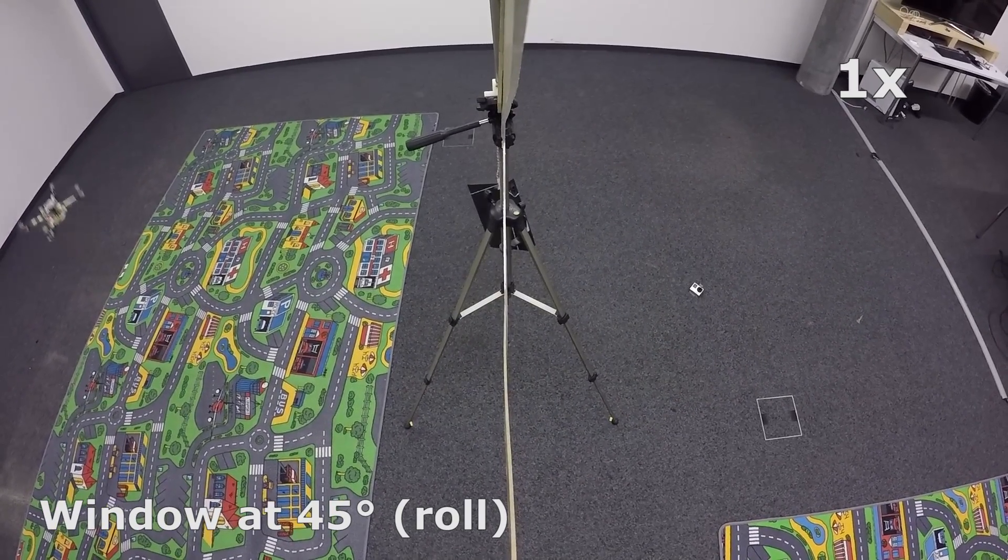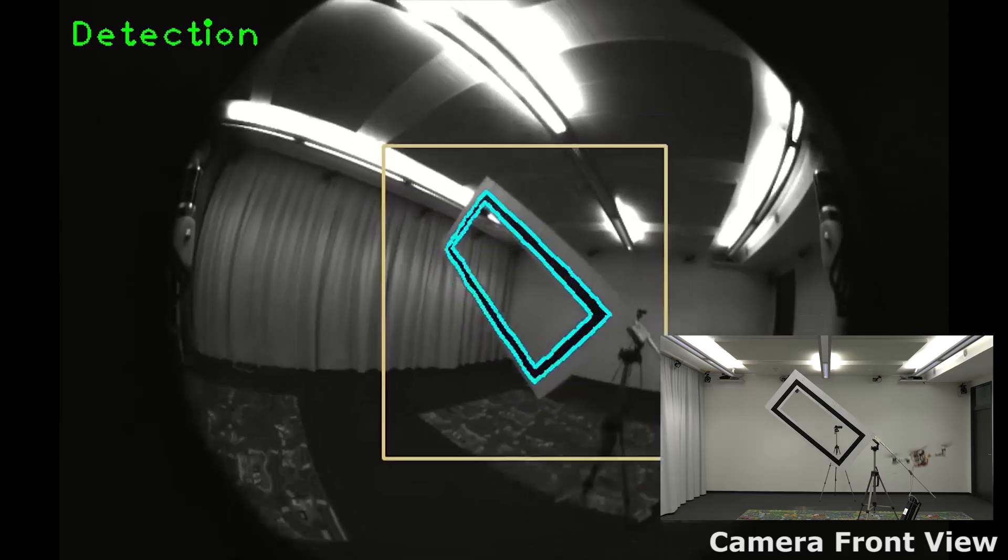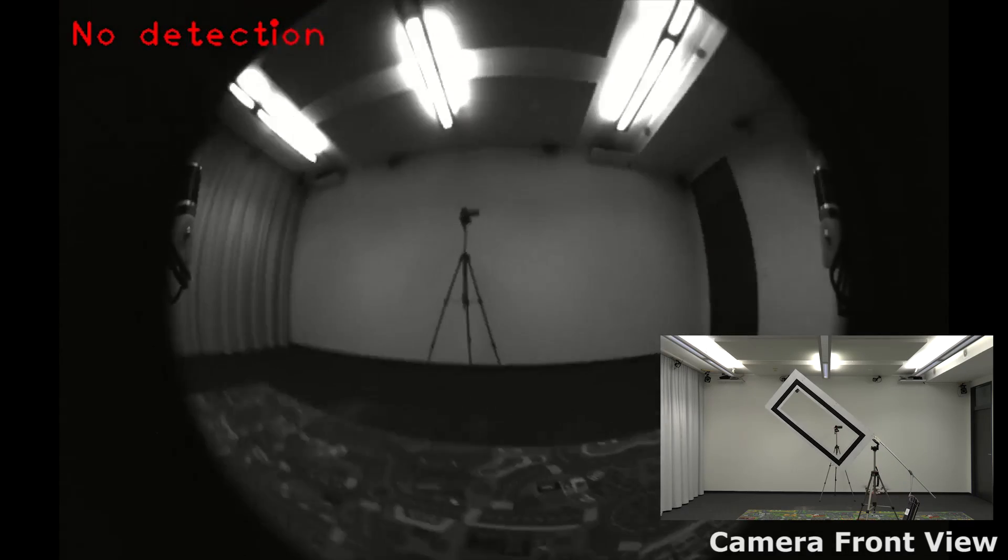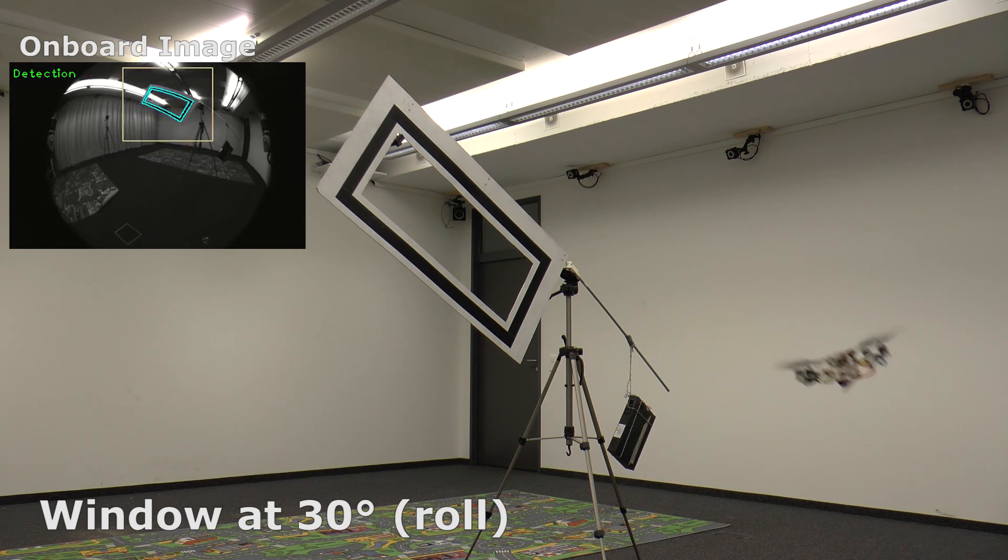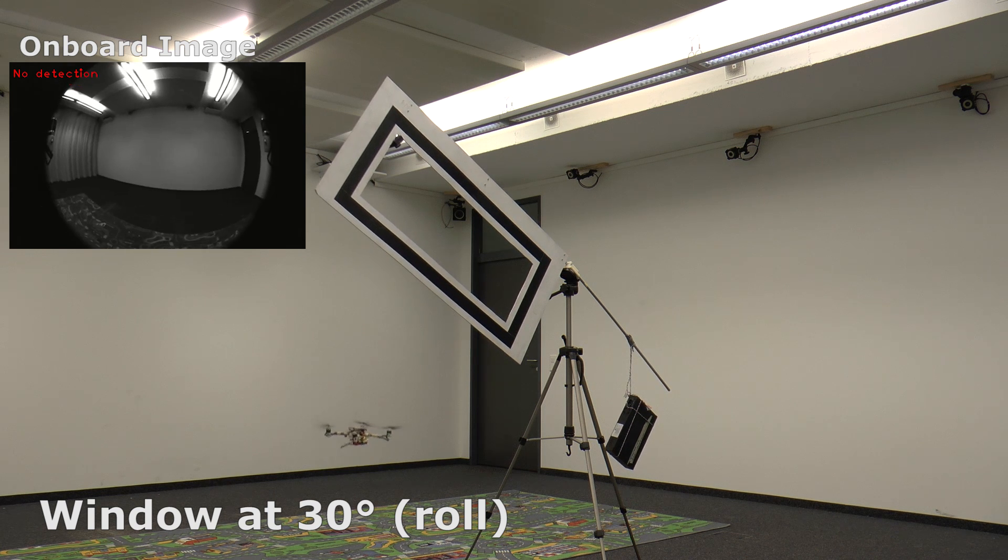We estimate the full state by fusing gap detections from a single onboard camera with an IMU. We generate a trajectory that considers geometric, dynamic, and perception constraints.